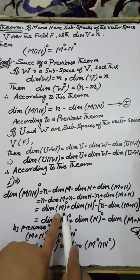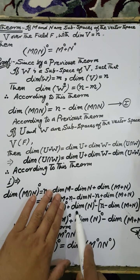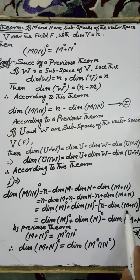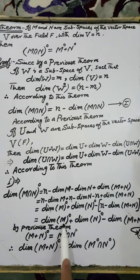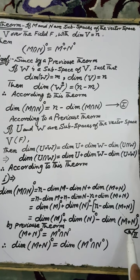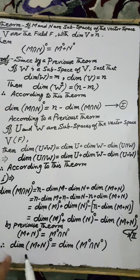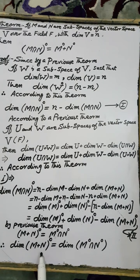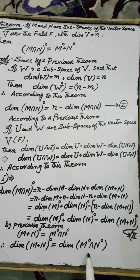Similarly, n minus dimension of N equals the dimension of the set of all annihilators of N. And minus n plus dimension of M plus N equals minus the dimension of the set of all annihilators of M plus N. Therefore the expression equals: dimension of annihilator of M plus dimension of annihilator of N minus dimension of annihilator of M plus N. By a previous theorem, the annihilator of M plus N equals the intersection of the annihilators of M and N, so dimension of annihilator of M plus N equals dimension of intersection of annihilators of M and N.